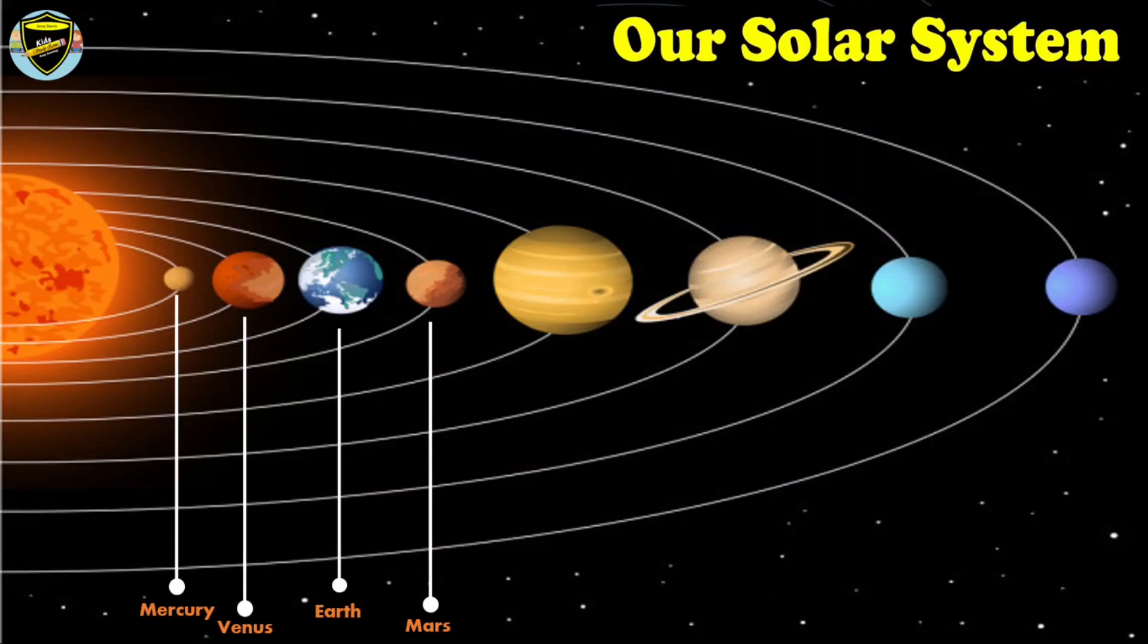The fifth planet in the solar system is Jupiter. Jupiter is the largest planet of the solar system.